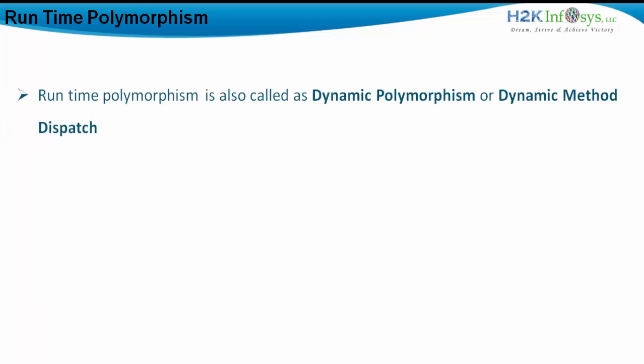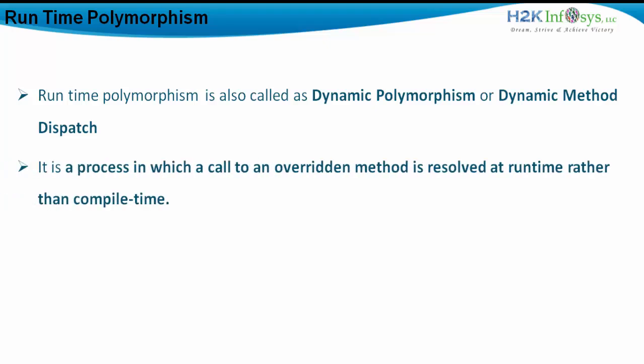Runtime polymorphism is also called dynamic polymorphism or dynamic method dispatch. It is a process in which a call to an overridden method is resolved at runtime rather than at compile time. Overridden methods have their own body defined and are overridden from abstract methods in an abstract class or from an interface. If overridden methods are present as abstract in an interface, the class with the overridden methods must implement that interface.